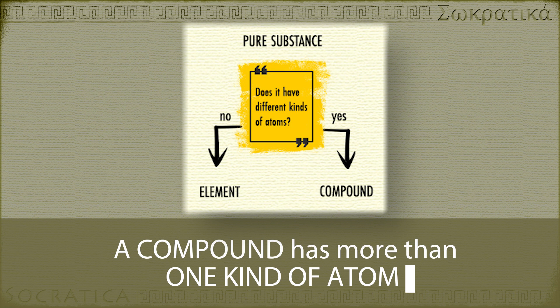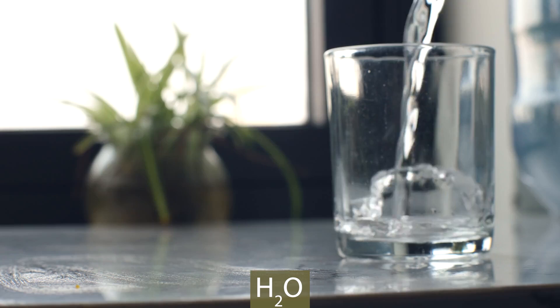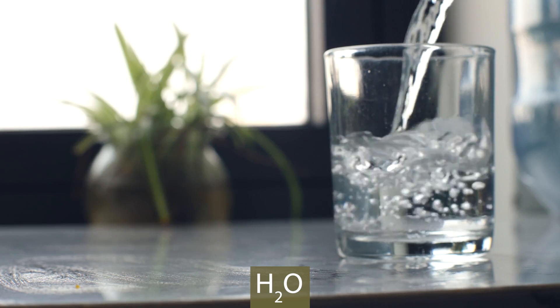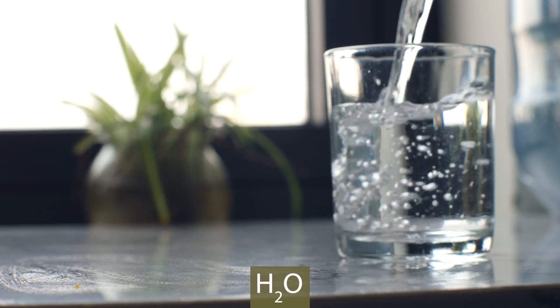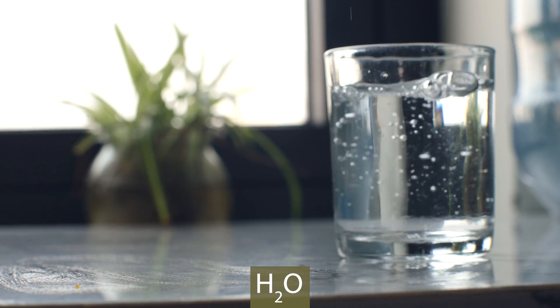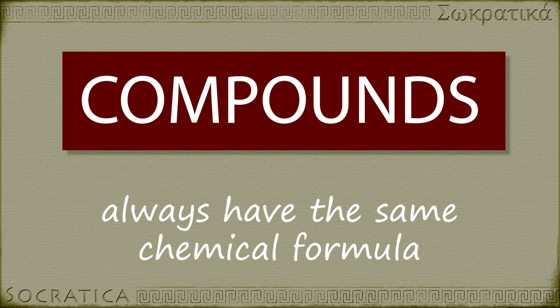A compound, on the other hand, is made up of more than one element, but it always has the same chemical formula. H2O, for instance—water—is a compound made of two kinds of atoms, hydrogen and oxygen. This compound always has two atoms of hydrogen bound to one atom of oxygen.